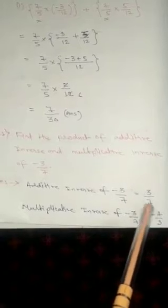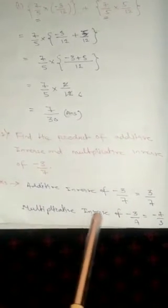Question number 11: Find the product of the additive inverse and multiplicative inverse of minus 3 by 7. The additive inverse of minus 3 by 7 is 3 by 7. The multiplicative inverse of minus 3 by 7 is minus 7 by 3. Their product is 3 by 7 into minus 7 by 3 — cancel 7 and 7, cancel 3 and 3 — giving minus 1. This completes Exercise 1.3. In the next video we will do Exercise 1.4. Thank you.